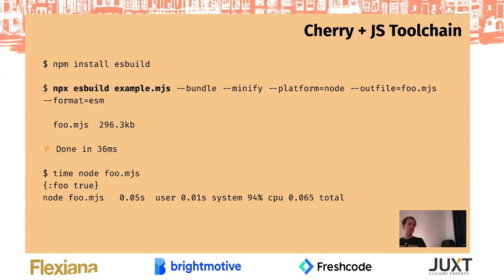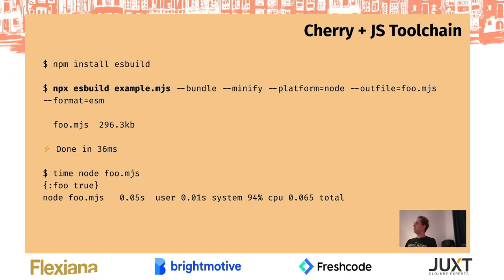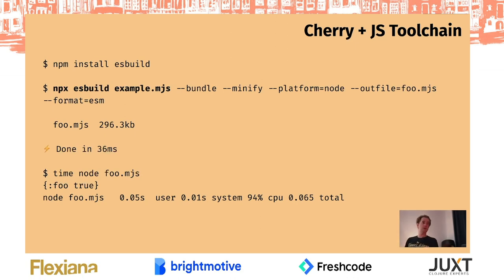Can we throw this JavaScript at a random JavaScript tool and have it process it for bundling? ES Build is a popular tool in the JavaScript ecosystem. If we bundle and minify it we get a file of 300 kilobytes — not so optimal, but I will explain why. It is standalone though — if you throw this file to another computer that doesn't have Cherry and run it with Node, it works because it's fully standalone.